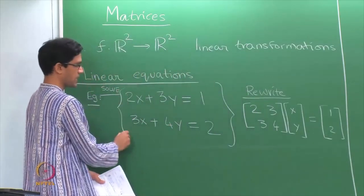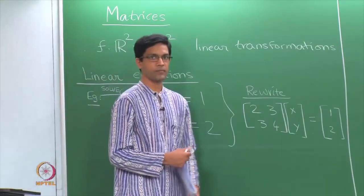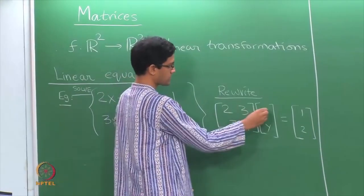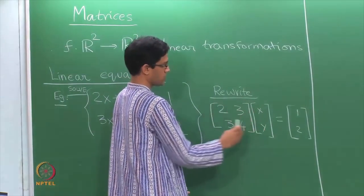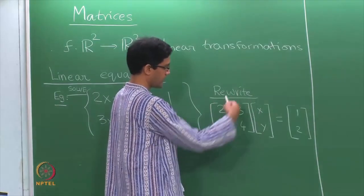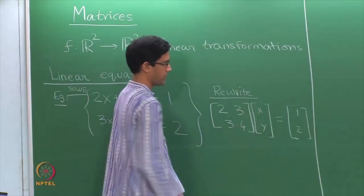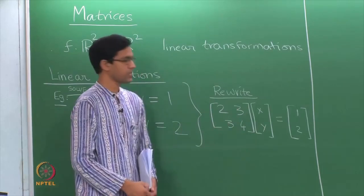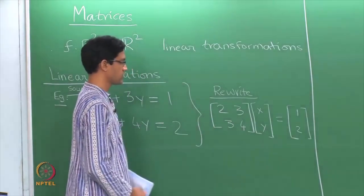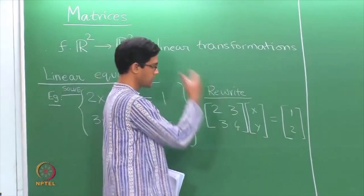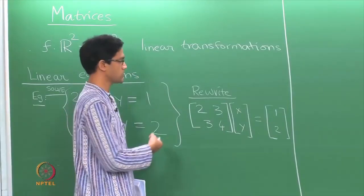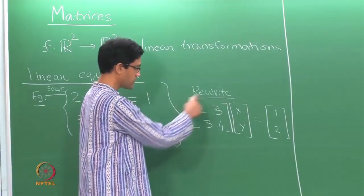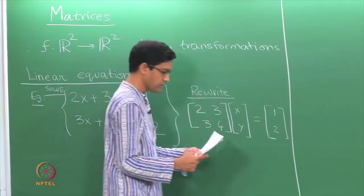This system is exactly equivalent to the equation written in matrix form. As is easy to check, the definition of matrix multiplication says you do 2 times x plus 3 times y for the first coordinate, and 3 times x plus 4 times y for the second. Equating these gives exactly the original equations. This suggests a way of solving: multiply both sides by the inverse of this matrix.